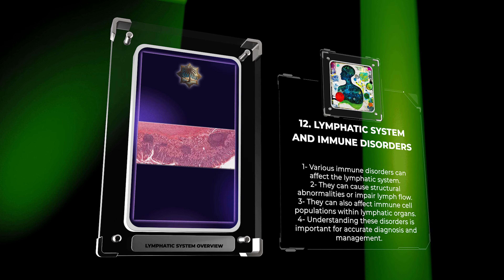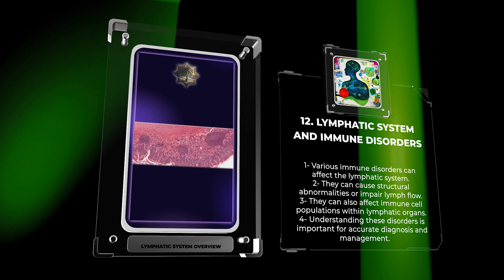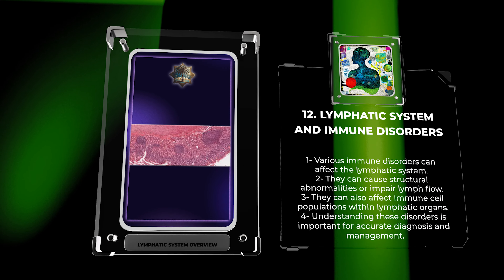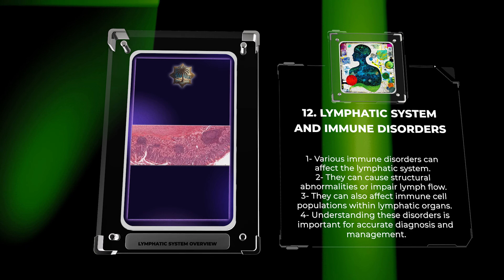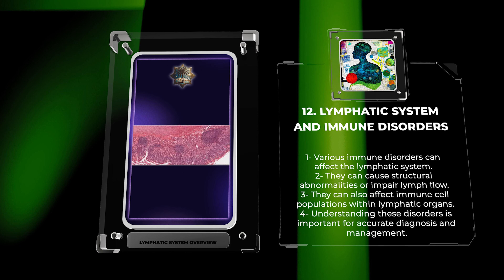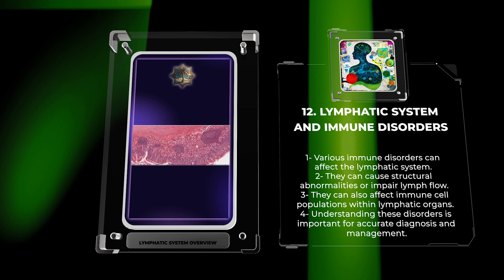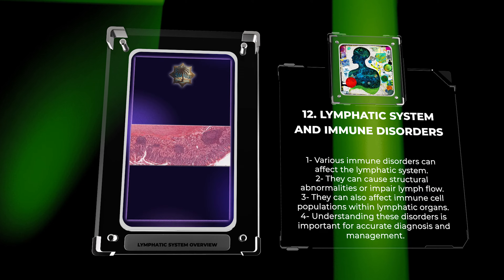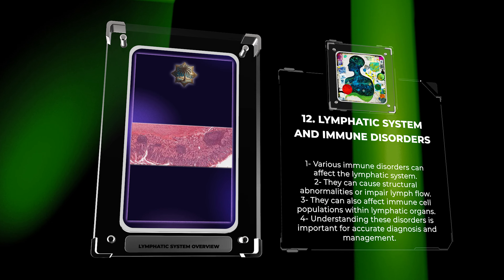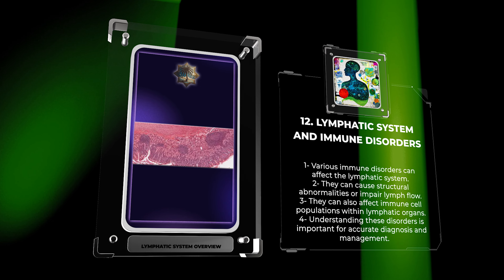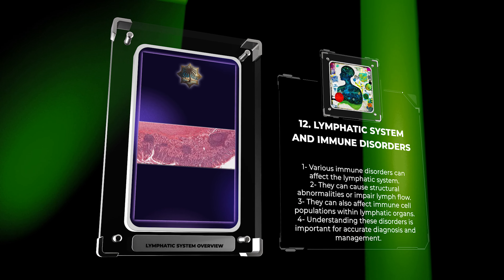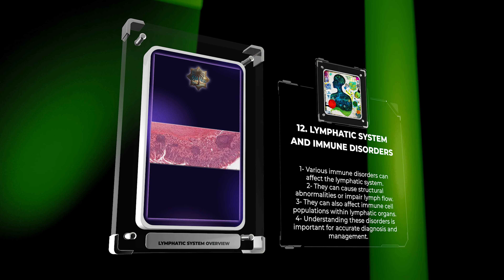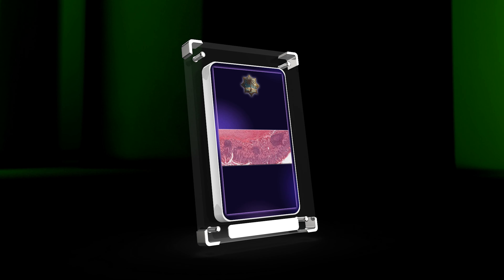Various immune disorders can impact the proper functioning of the lymphatic system. Conditions such as lymphadenopathy, lymphangitis, lymphoma, and autoimmune diseases can cause structural abnormalities, impair lymph flow, or affect immune cell populations within lymphatic organs. Understanding the underlying mechanisms of these disorders is crucial for accurate diagnosis, effective management, and developing targeted therapies.